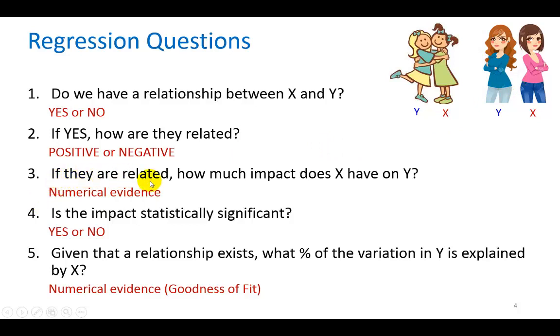Thirdly, if they are related, either positively or negatively, how much impact does X have on Y? Keep in mind that X is the explanatory variable. That's the variable we believe can help explain the behavior of Y. If this is X, we want to know how deeply influential is this person over this individual called Y? And for that matter, number four, is that impact statistically significant? It's going to be a yes or no answer. Finally, given that a relationship exists between X and Y, what proportion or what percentage of the behavior of Y, or variation of Y, is explained by X? For this, we're going to be looking for numerical evidence called goodness of fit.